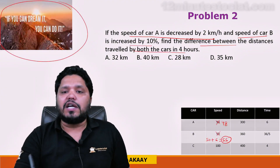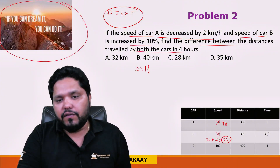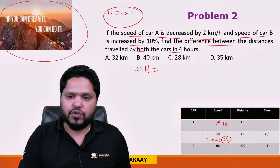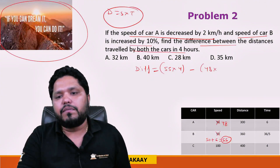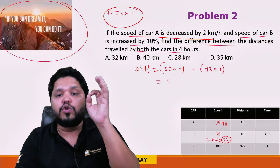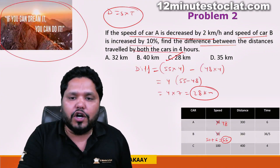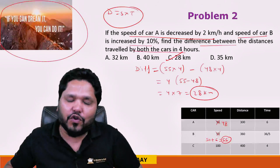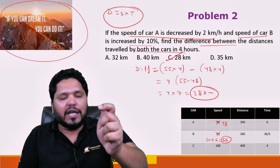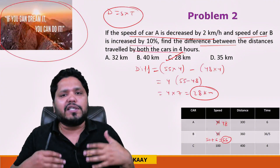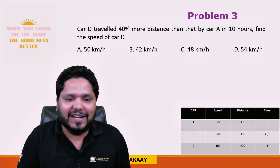Find the difference between the distances traveled by both cars in 4 hours. Distance = speed × time. Since time is the same for both, we can take time as common. The difference = (55 − 48) × 4 = 7 × 4 = 28 km. In the exam, please don't solve each part separately till the end — take common factors; most of the time things cancel out.